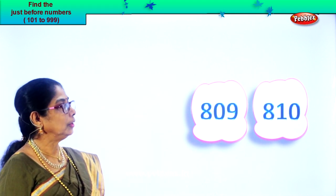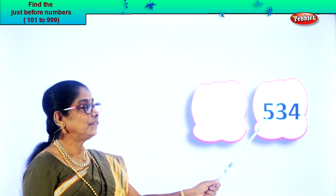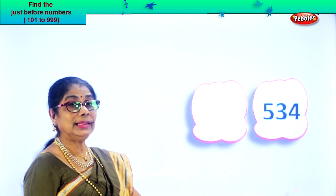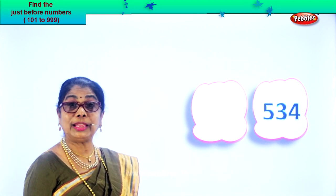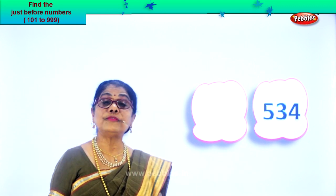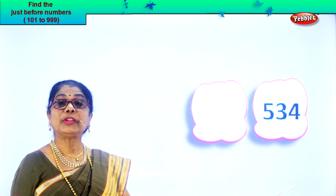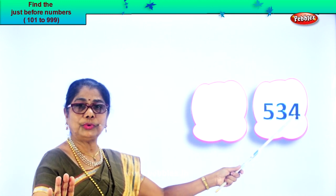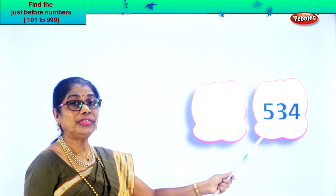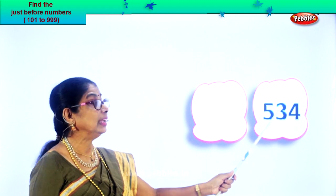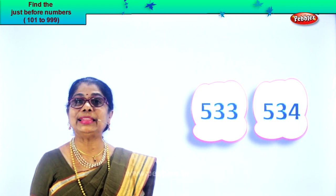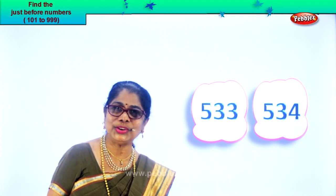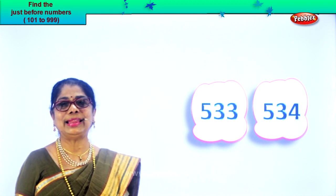Look what you have — five hundred and thirty-four. Five in the hundreds place, three in the tens, and four in the ones place. Find the number just before. In the ones place you have four — one less than four is three. So thirty-four becomes thirty-three. Five hundred and thirty-three is the number before. Five hundred and thirty-three, five hundred and thirty-four.